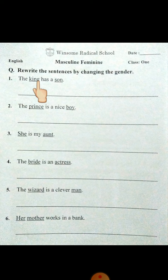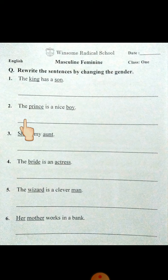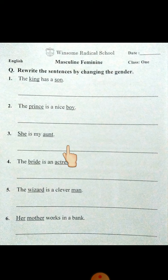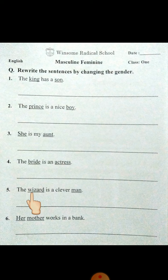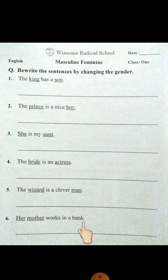Now let's repeat all the answers. Number one: The king has a son — the queen has a daughter. Number two: The prince is a nice boy — the princess is a nice girl. Number three: She is my aunt — he is my uncle. Number four: The bride is an actress — the groom is an actor. Number five: The wizard is a clever man — the witch is a clever woman. Number six: Her mother works in a bank — his father works in a bank. Now you have to learn it and then solve it. Allah Hafiz.